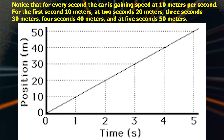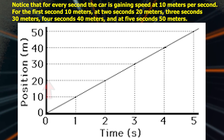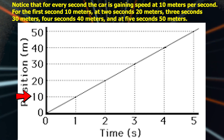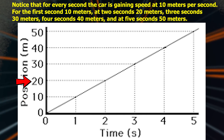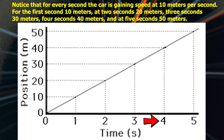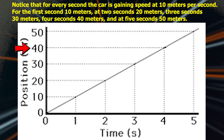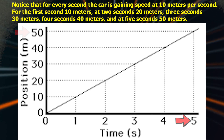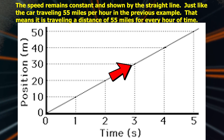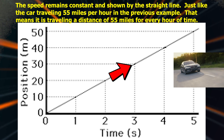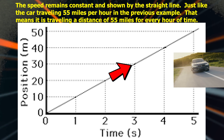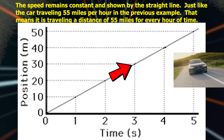Let's look at this graph to see what uniform steady speed looks like. Notice that for every second, the car is gaining speed at 10 meters per second. At 1 second: 10 m/s. At 2 seconds: 20 m/s. At 3 seconds: 30 m/s. At 4 seconds: 40 m/s. At 5 seconds: 50 m/s. The speed remains constant as shown by the straight line. Just like the car traveling 55 miles per hour — it is traveling a distance of 55 miles for every hour of time.